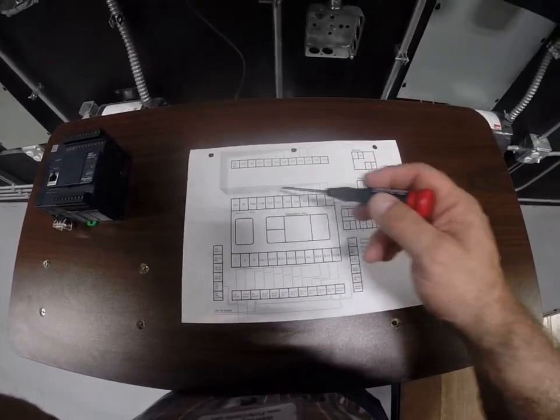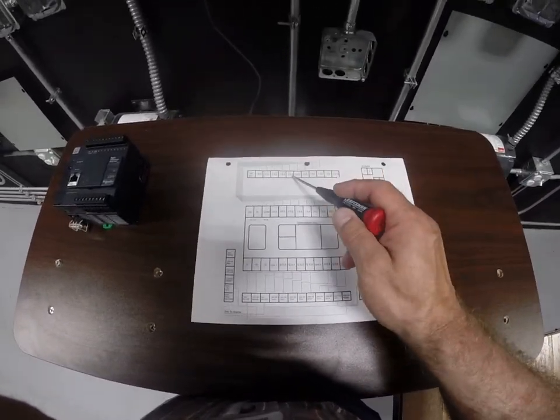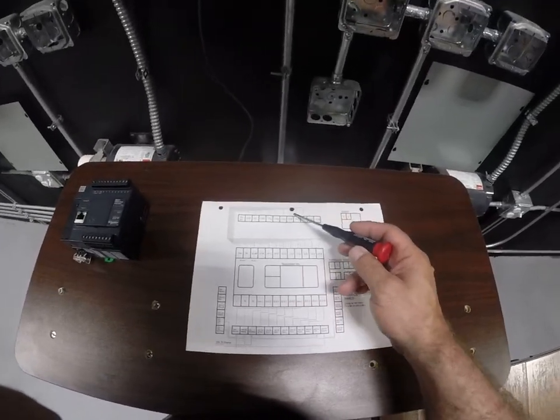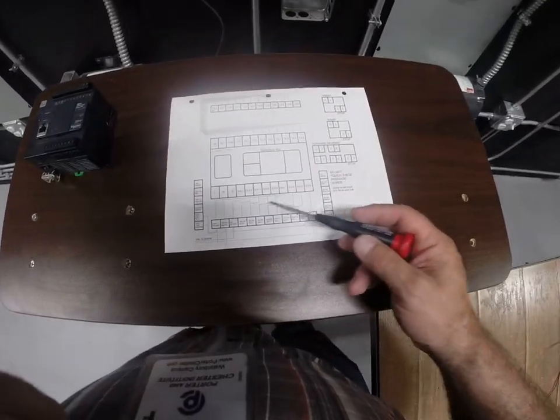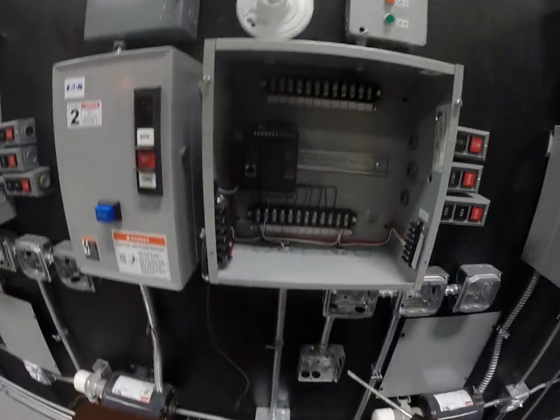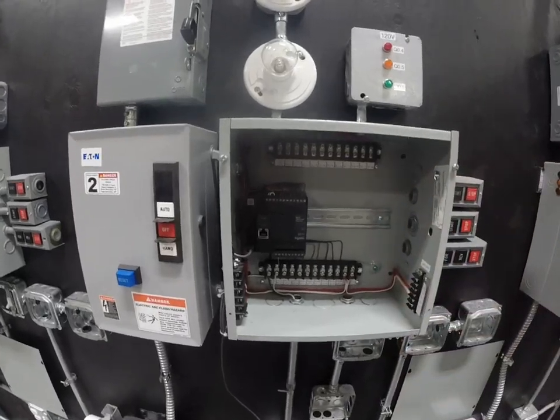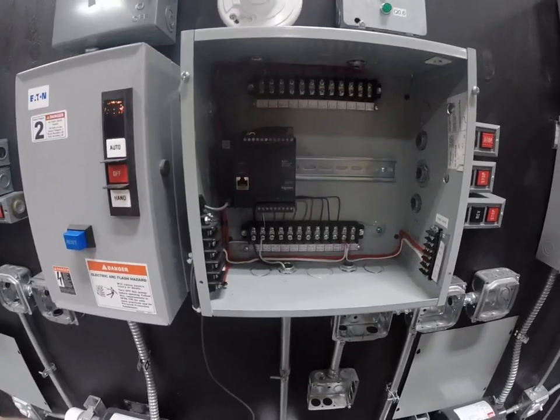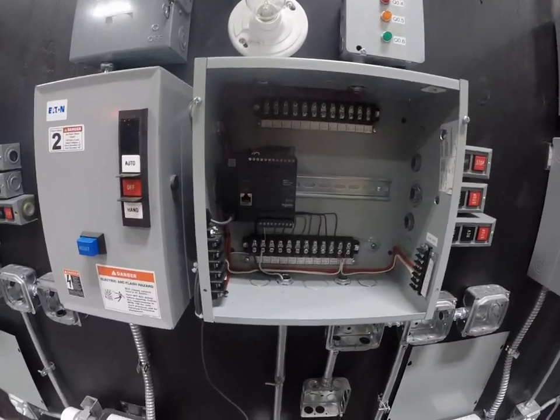Now, I have my PLC controller, and I have a terminal strip on the top and a terminal strip on the bottom. You'll notice that there's wires that are already wired in, and this is the base setup of this controller. There's the PLC, wires are wired in. That's basically your control panel.